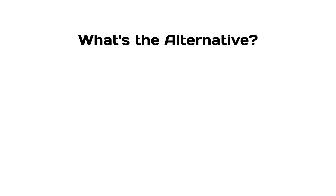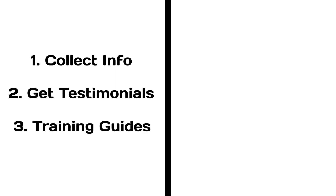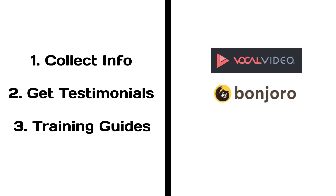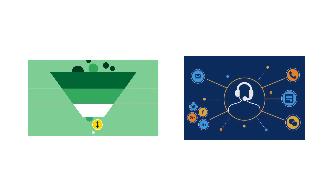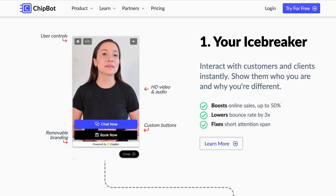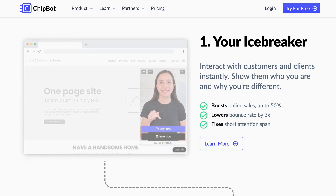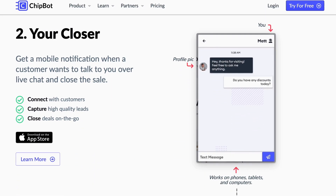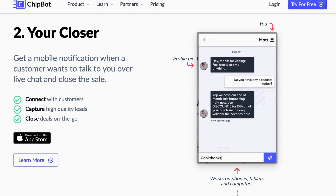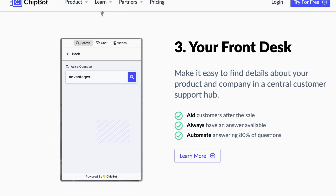So what's the alternative? Well, it depends on what your goals are. If you're trying to collect more information, get recorded testimonials, or build video training guides, there are alternative companies like Vocal Video, Bonhoro, and Dub. But if you're trying to get more online sales or handle customer support, then the best alternative is ChipBot. Unlike VideoAsk, ChipBot is built to work directly on your existing website. It uses video to hook customers in, and then offers live chat and search to help close the sale. It's the modern way of interacting and selling to customers.